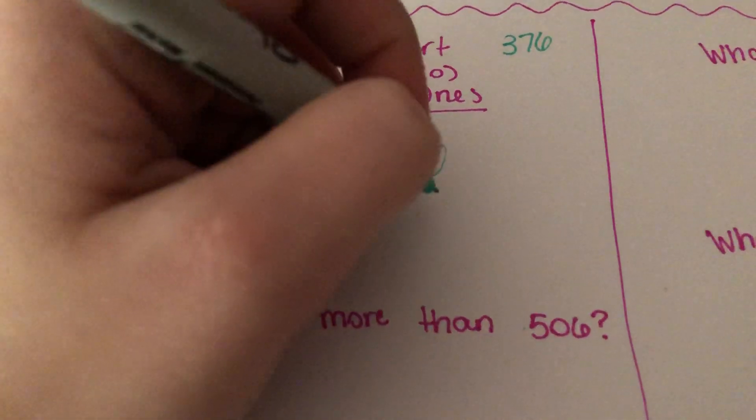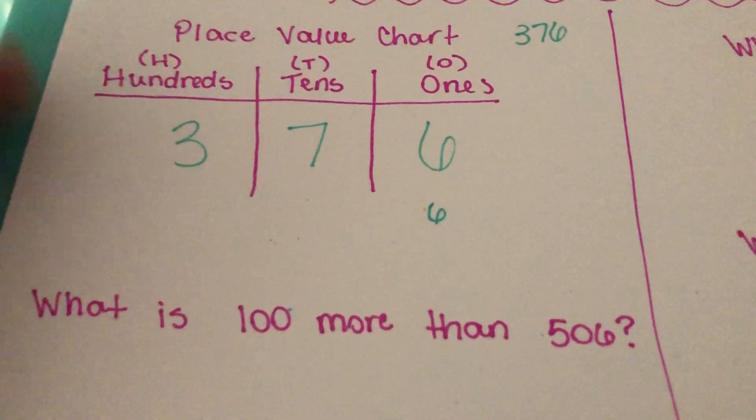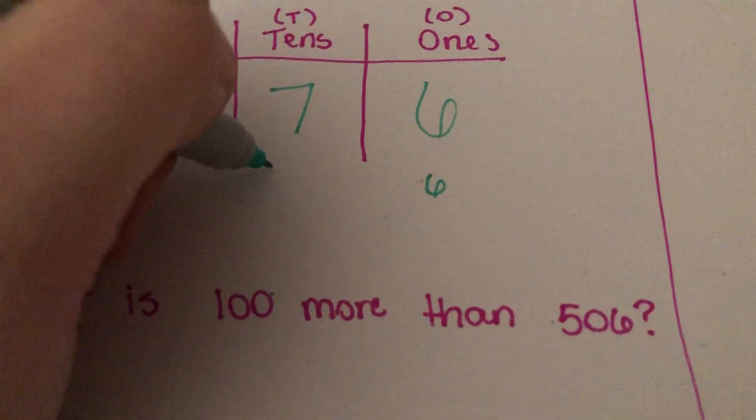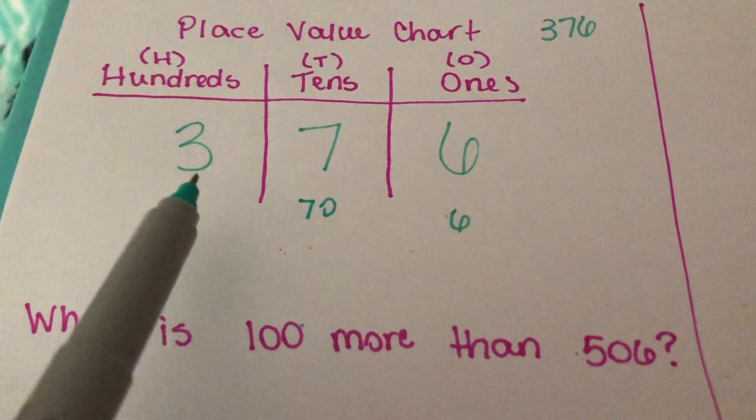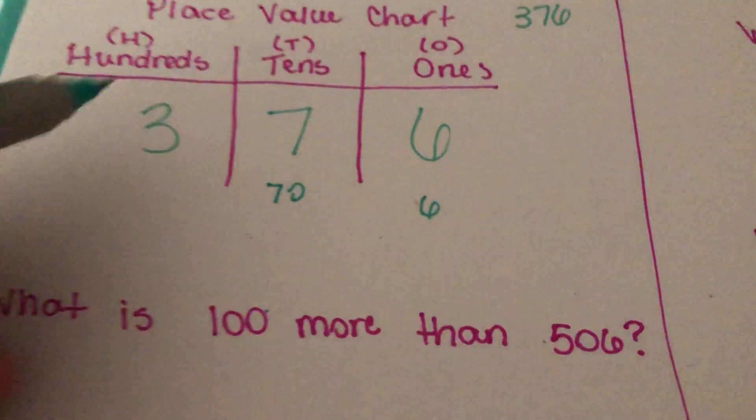Seven tens, the value of that 7 is not 7, it's actually 70. Because if you count seven tens, if you count by 10 seven times, you're going to get the number 70. And then if you say three hundreds, well three hundreds isn't 3, it's not 30, it's 300.